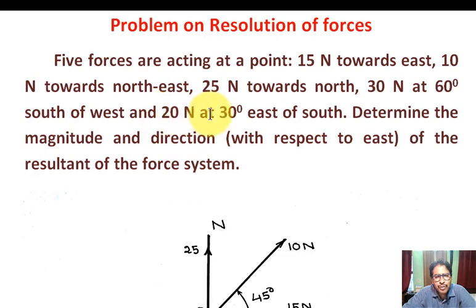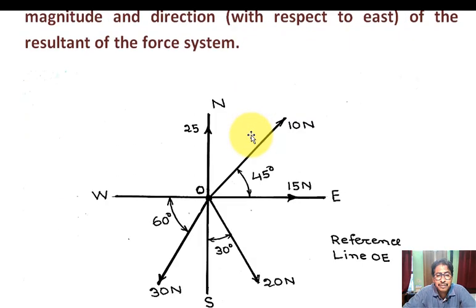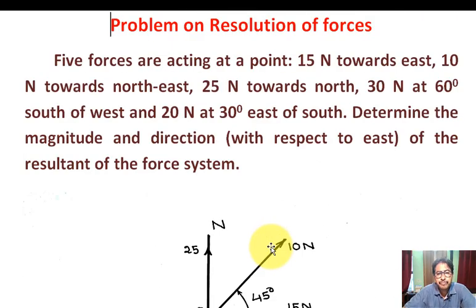Number five: 20 Newton at 30 degrees east of south. East of south means the direction is towards east of south, with south — the angle with south is 30 degrees. So again, five forces are acting at a point.